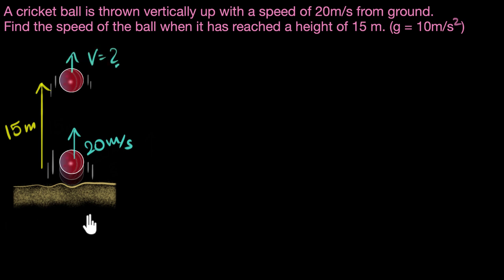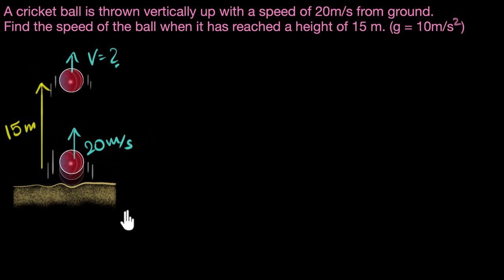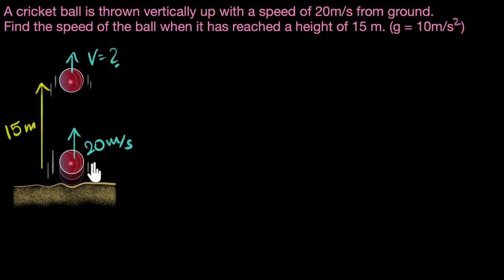How do we solve this problem? One way is we could use the equations of motion — we have solved problems like this before in videos on motion. But in this video, let's use energy conservation. Energy conservation says that as this ball is rising up, the total energy — kinetic plus potential — does not change as the ball goes from the ground to that height.